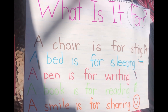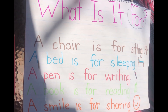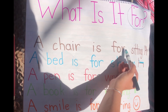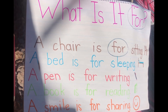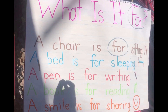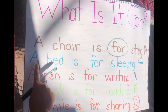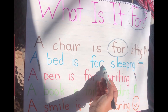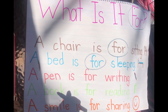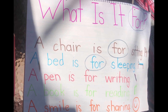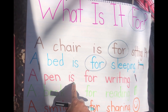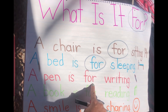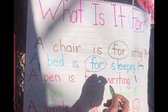Can you find another 'for'? A chair is for — F-O-R. Let's see if we can find a 'for' in the next sentence: a bed is for sleeping. For — F-O-R. Let's check the next sentence: a pen is for writing. Where is the 'for'? There it is — F-O-R.